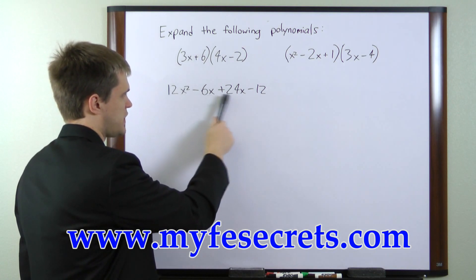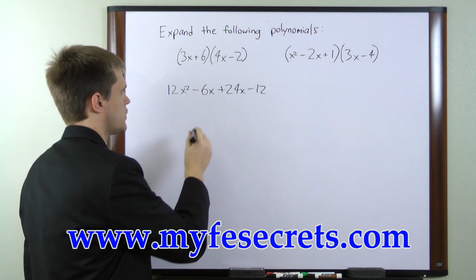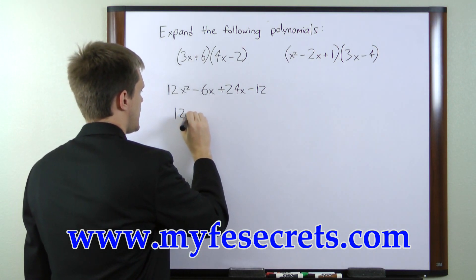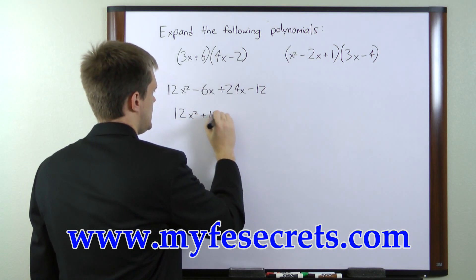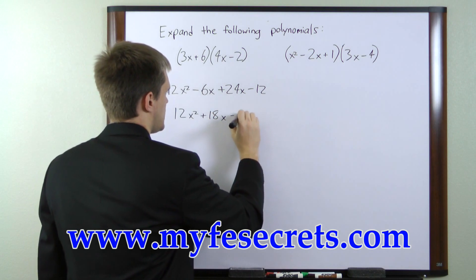We need to combine like terms. We have 2 x's here, so we'll go ahead and combine those. That gives us 12x squared plus 18x minus 12.